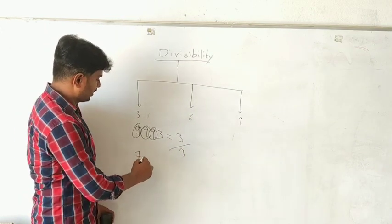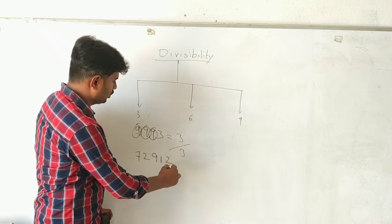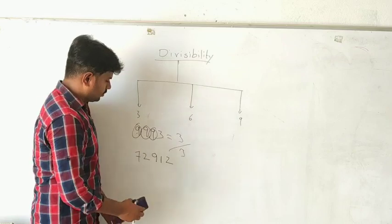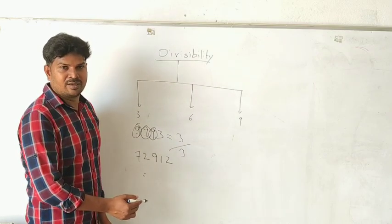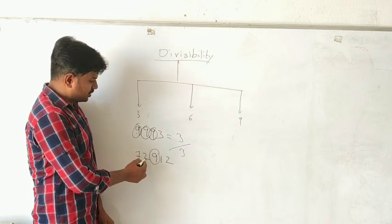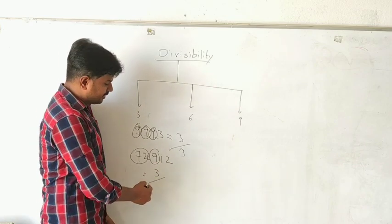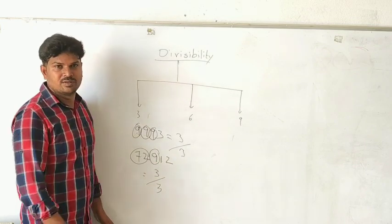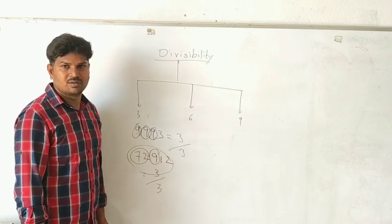Take one more example: 72912. As I told you, ignore 9 or sum of multiples of 9. I can ignore this 9, and 7 plus 2 is 9, I can ignore this. Now, what is left? 1 plus 2 is 3. Does 3 get divisible by 3 or not? It gets divisible. So obviously, this whole number is divisible by 3.